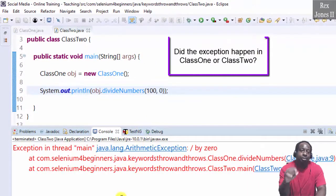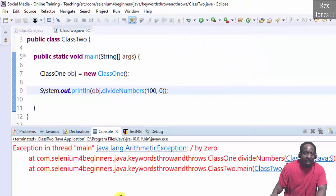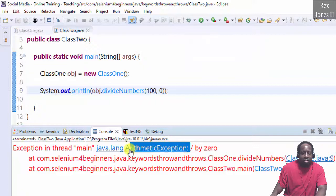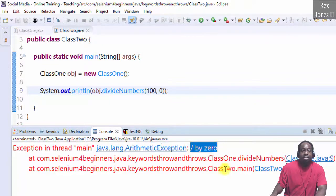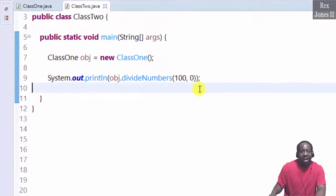Did the exception happen in Class 1 or Class 2? The stack trace shows us ArithmeticException divided by zero, and Class One divideNumbers. When the exception happened, the code was running in Class One. However, Class Two must handle the exception because it sent the values 100 and 0. Let's handle the exception.